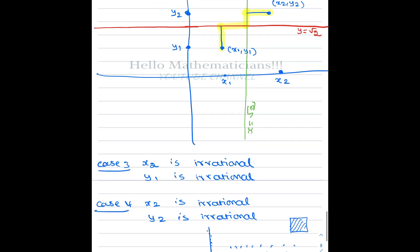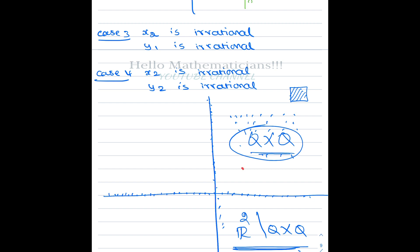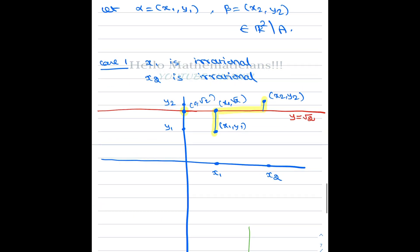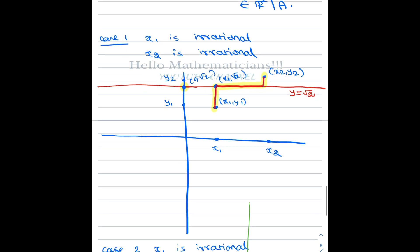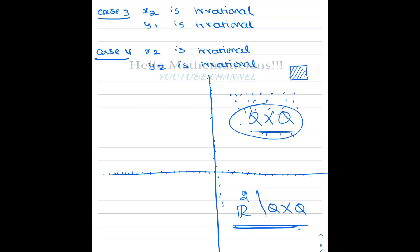Even though R² minus Q×Q looks like lots of dots scattered around, it actually contains many full line segments — we just constructed one such path entirely within R² minus Q×Q. This shows that R² minus Q×Q is path connected.